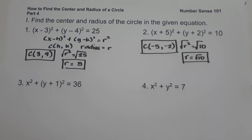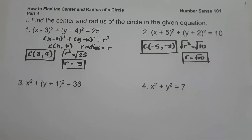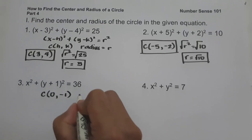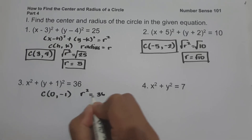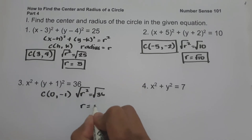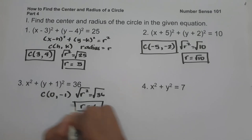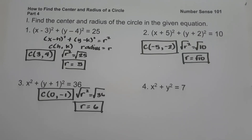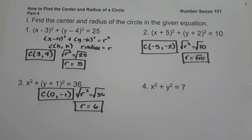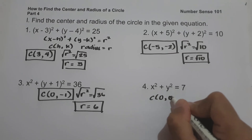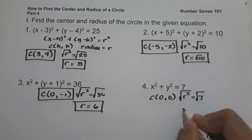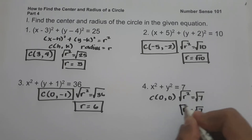On number 3, we have x squared plus (y plus 1) squared equals 36. Since there is no value for h, the center is (0, negative 1). And r squared equals 36, so the radius is square root of 36, which is 6. On number 4, we have x squared plus y squared equals 7. Since there is no h and k, the center is (0, 0). And r squared equals 7, so the radius is square root of 7. And this will be our answer.